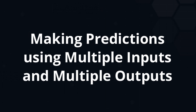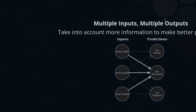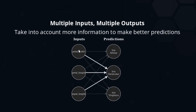We will continue working on the flower species prediction like in the previous video, except this time we will combine everything that we have learned so far and put together multiple inputs to predict multiple outputs. That will allow us to take into account multiple measurements and make better predictions. Our neural network will have multiple inputs, multiple outputs, and it will take into account not just petal width but petal length and sepal length as well — though we will stick to three for now to keep it simple.